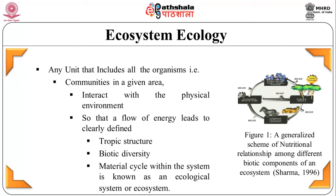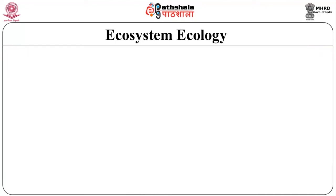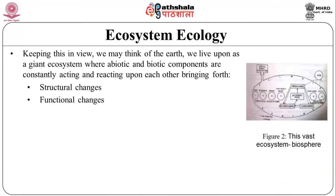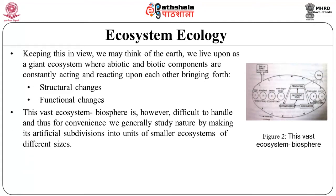Figure 1 shows a generalized scheme of nutritional relationships, the food links among living organisms of such a system. We may think of the Earth as a giant ecosystem where abiotic and biotic components are constantly acting and reacting upon each other, bringing forth structural and functional changes. This vast ecosystem — the biosphere, as shown in figure 2 — is difficult to handle and thus, for convenience, we generally study nature by making artificial subdivisions into units of smaller ecosystems, such as terrestrial ecosystems like forest or desert, man-engineered ecosystems like croplands, and aquatic ecosystems in freshwater and marine.